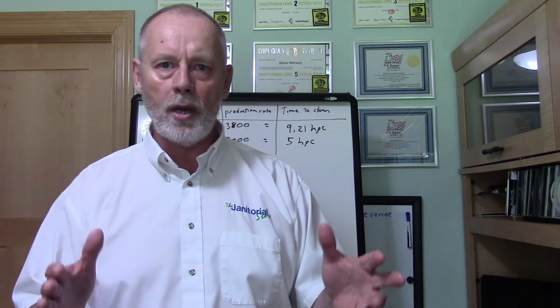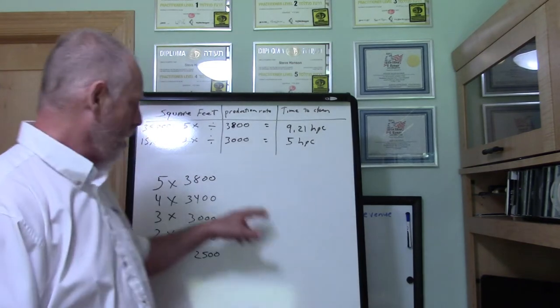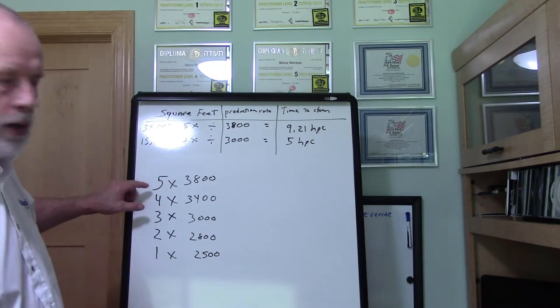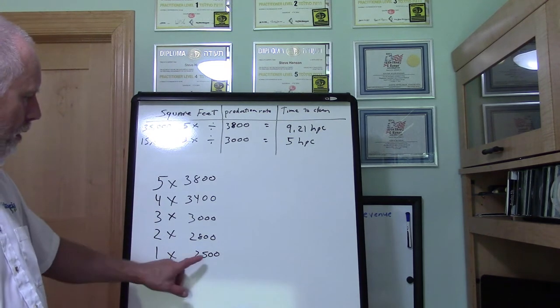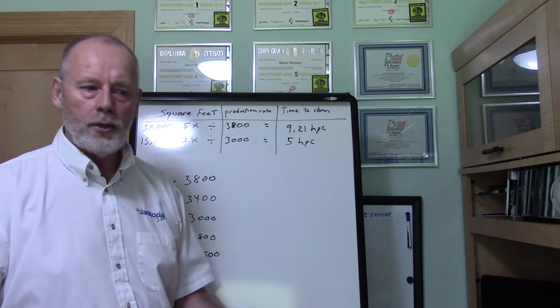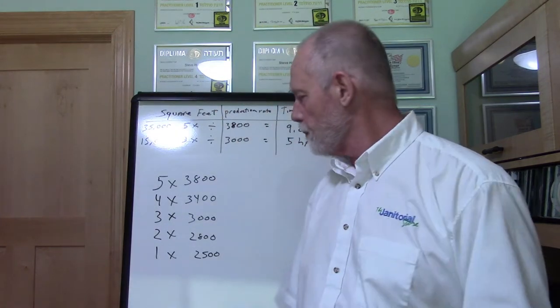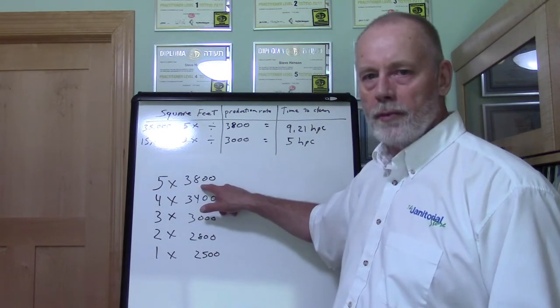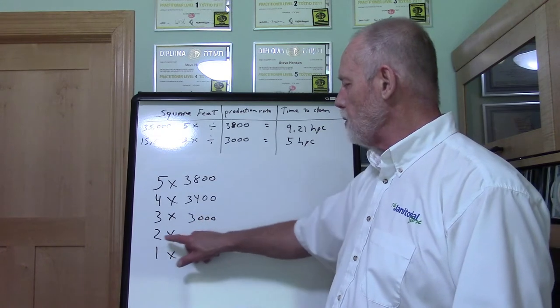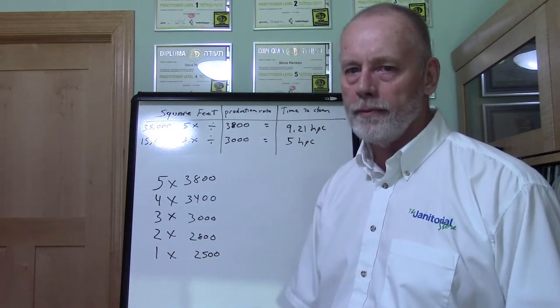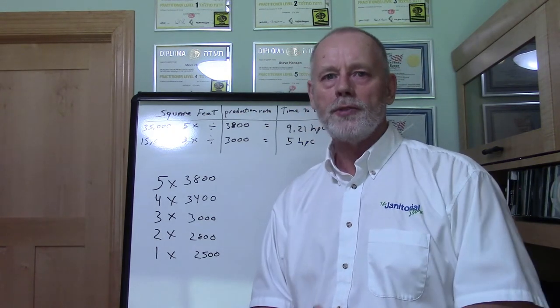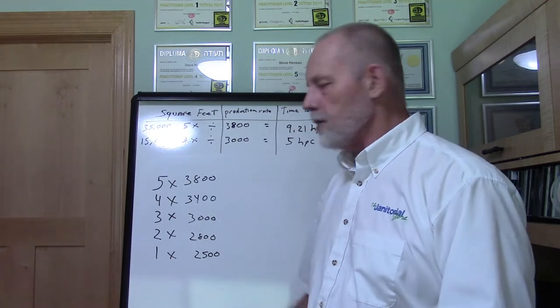Where do these production rates come from? You want to start tracking them. If you're a solo company, go out and know the square footage of your accounts and time how long it takes you to clean — that's how you arrive at your production rates. It helps to set up a chart like this one, showing production rates by service frequency: five days per week is 3,800 sq ft/hr, four days is 3,400, three days is 3,000, two days is 2,800, and one day is 2,500 square feet per hour.